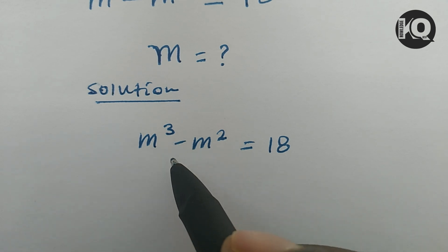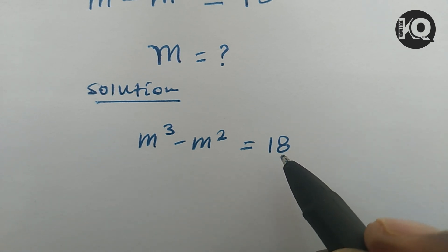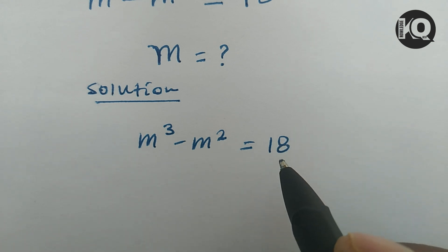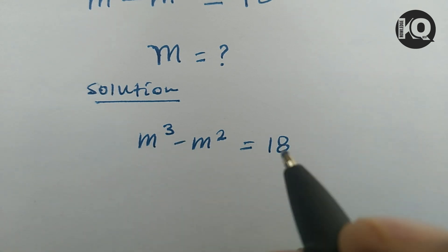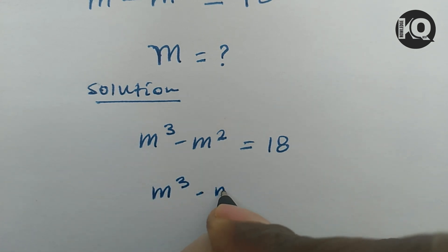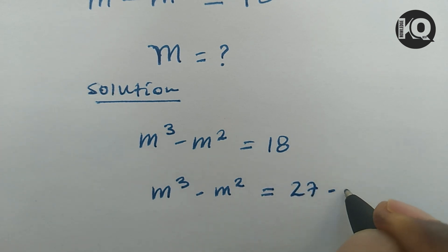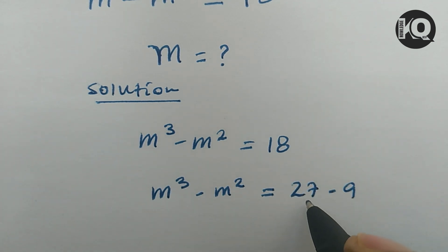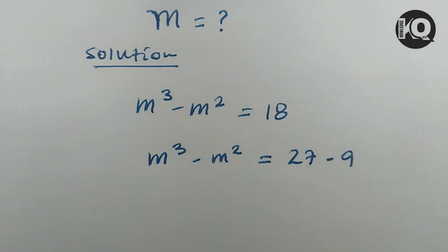The first step of solving these types of equations is we have to express both the left-hand side and the right-hand side in the same manner. To do that, we have to express 18 in the form of m cubed minus m squared. So let's express 18 as a difference of two numbers: 27 minus 9. We choose 27 because it can be expressed as m cubed, and 9 as m squared.